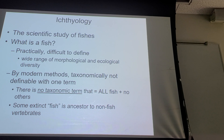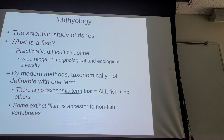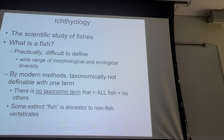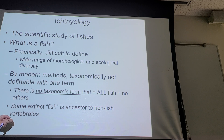So this hypothetical ancestor that was the first fish gave rise, through evolutionary processes, to all the other fish, but also to some things that we call not fish. What group of organisms are those? All mammals come from an organism at some point in evolutionary history that was a fish.